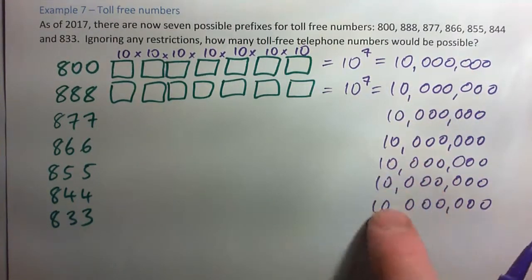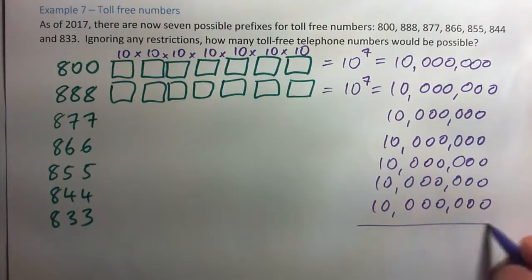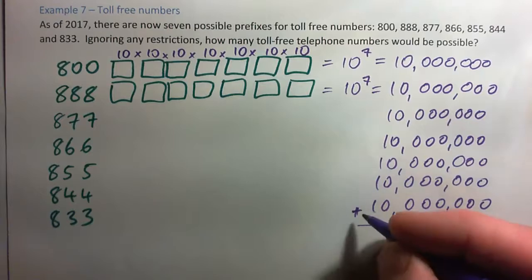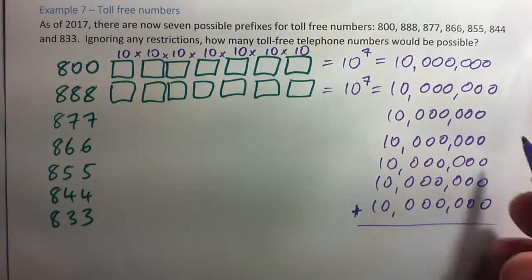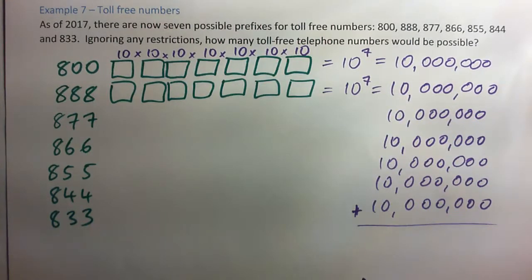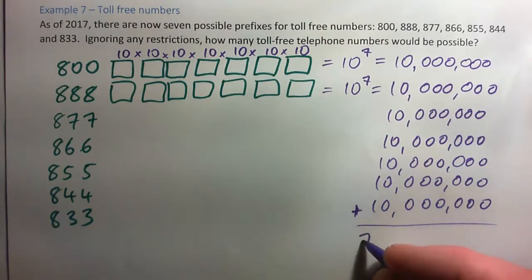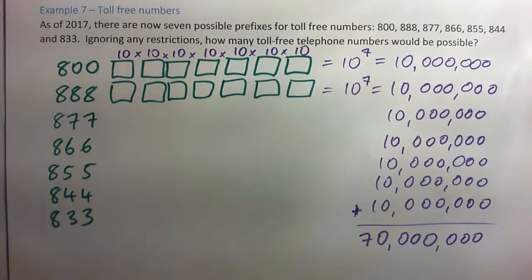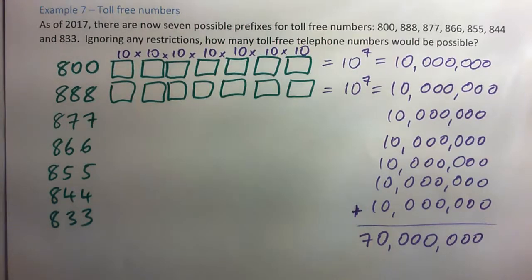So that's seven prefixes, each with 10 million possible numbers. As a fun fact, I think there are about 120 million phone numbers in the USA. That gives us 70 million possible toll-free numbers using these seven prefixes.